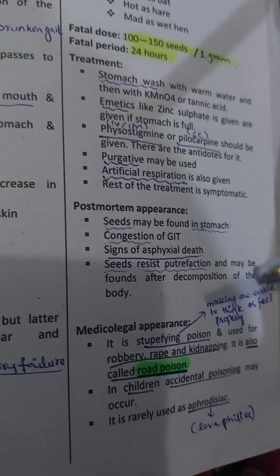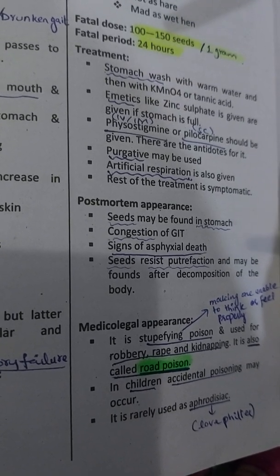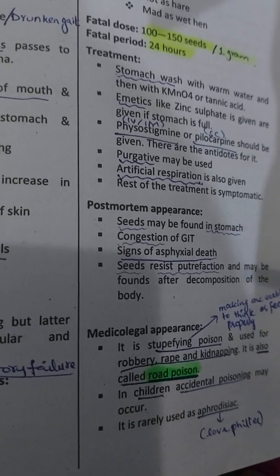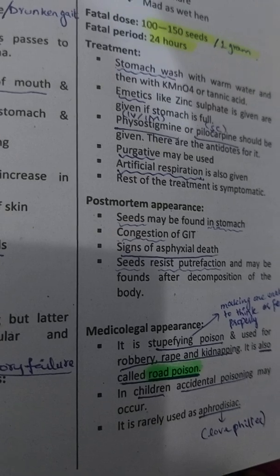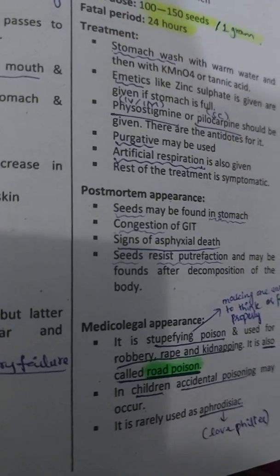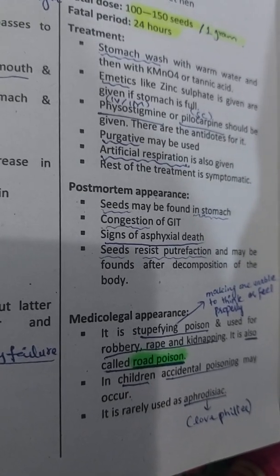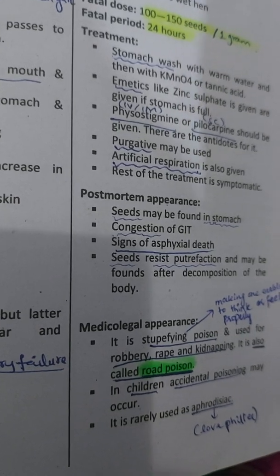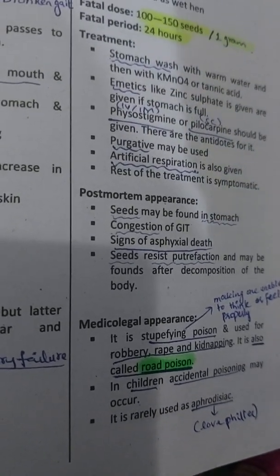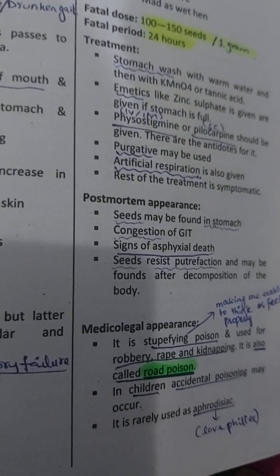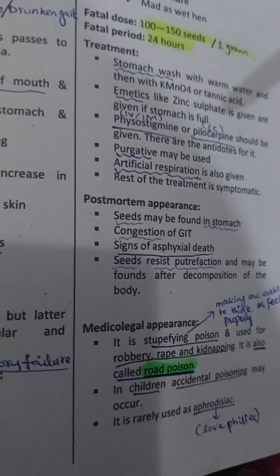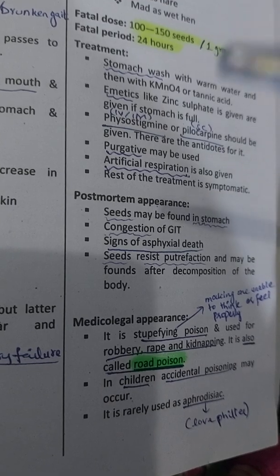In post-mortem examination, seeds are seen in the stomach. The patient's GIT is mostly congested. Asphyxial death is mostly seen in cases of Dhatoura poisoning. Importantly, the seeds are the most poisonous part, and they resist decomposition — even after the body decomposes, the seeds remain intact in the stomach, confirming Dhatoura poisoning.